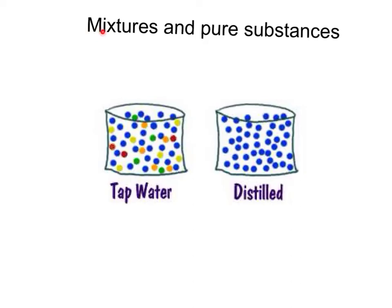In this video we're going to talk about the difference between a mixture and a pure substance. Now here we've got two different types of water. On the left hand side you've got the tap water, on the right hand side you've got the distilled water.